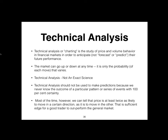The best we can hope to achieve is a probability of around 80% for any particular outcome, which means something unexpected will occur at least one in five times. Most of the time we can tell that price is at least twice as likely to move in a certain direction — that is sufficient edge for a trader to outperform the market.